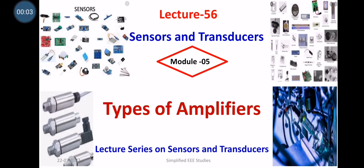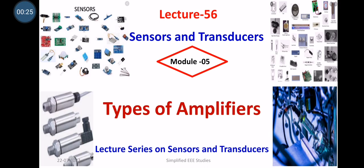Welcome to the lecture series on sensors and transducers. In this session I am going to discuss what we mean by amplifiers and what are the types of amplifiers. An amplifier is a signal conditioning device. The output of a sensor or transducer will have very weak signal strength, so we need amplifiers to strengthen the signal. There are different types of amplifiers which we will cover in this session.